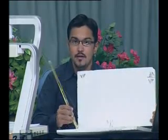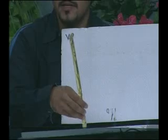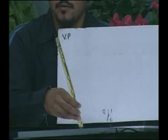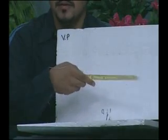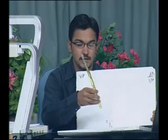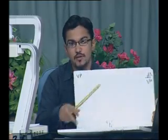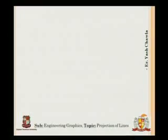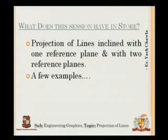Today what we are going to do is that instead of keeping the line straight, we are going to tilt the line first with one reference plane — making an angle with HP — and then with VP, and then we will have inclination with both reference planes, meaning the line makes an angle with VP as well as HP. So today we are going to discuss projection of a line inclined to one reference plane and two reference planes, and then we are going to solve related examples.